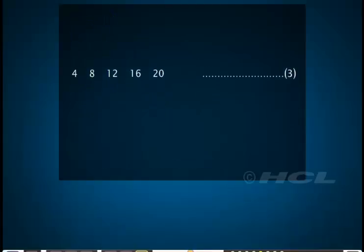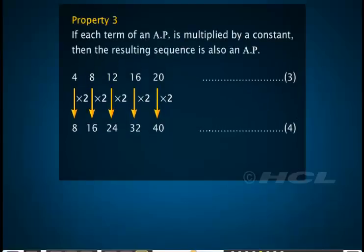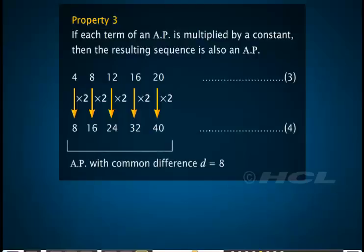Let's multiply each term of AP 3 by 2 to get a sequence of numbers denoted by 4 as shown. Observe that the resulting sequence 4 is also an AP with a common difference 8. If each term of an AP is multiplied by a constant, then the resulting sequence is also an AP.